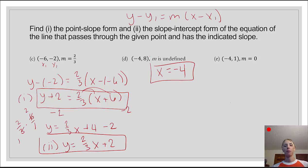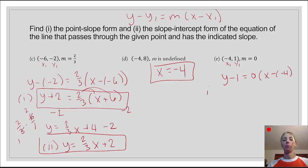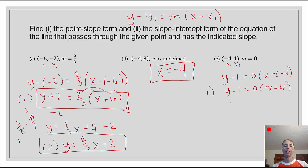For the last example, we have the point (negative 4, 1) and a slope of 0. This is a special type of line — a horizontal line. In point-slope form: y minus 1 equals 0 times x minus negative 4. For slope-intercept form, we simply say y equals the y-coordinate of the given point, so y equals 1.